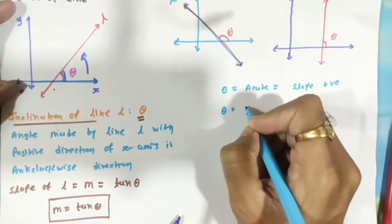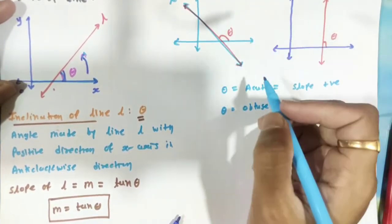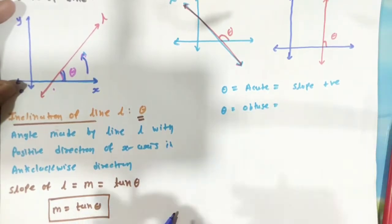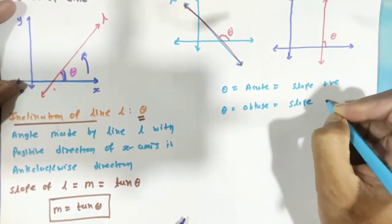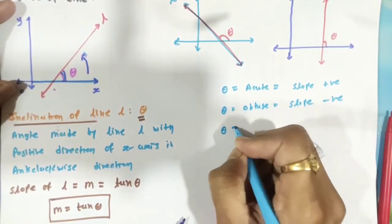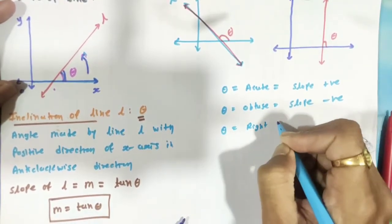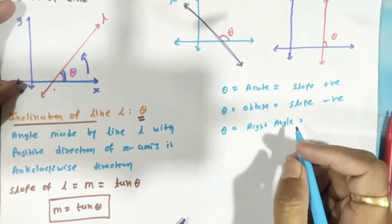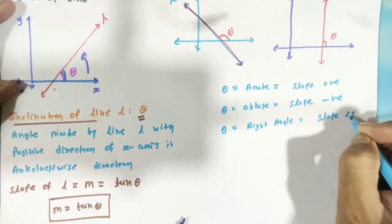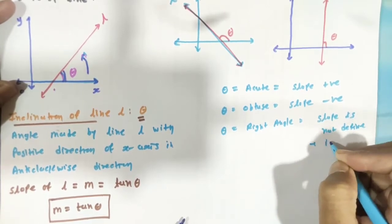If theta is greater than 90 and less than 180 degrees, then tan(theta) will be negative, so the slope of the line is negative. Here, if theta is 90 degrees — a right angle — then tan(90) is not defined, so the slope of the line is not defined, or we can say the slope is infinite.